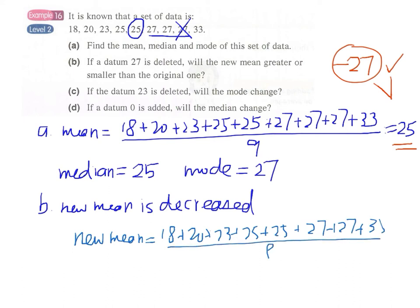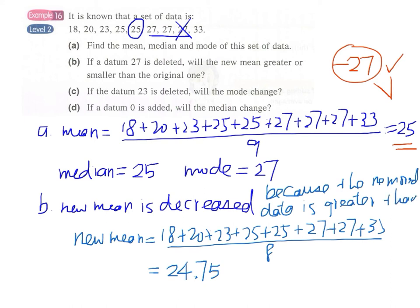And then divide this by 8. Using our calculator, we get the answer 24.75. So this is our evidence. But actually, in our prediction, we base on the comparison of the data to remove and the original mean. So the new mean is decreased because the removed data is greater than the original mean.